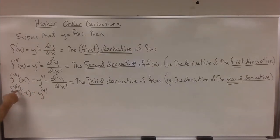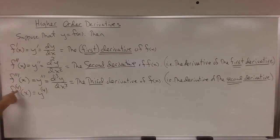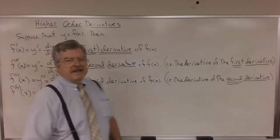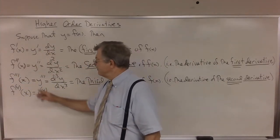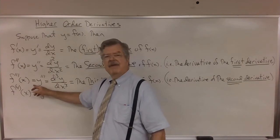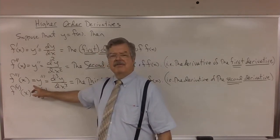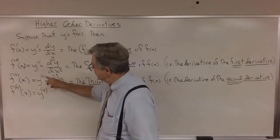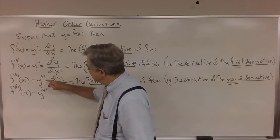This number in parentheses represents the order of the derivative, so this represents the fourth derivative. And it makes sense. If we had the tenth derivative, we wouldn't want to have to count all the little prime marks.